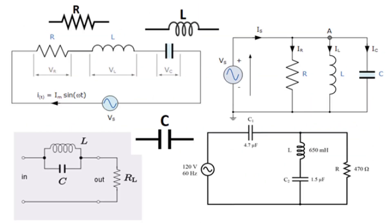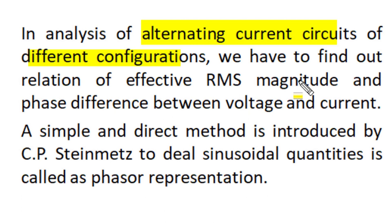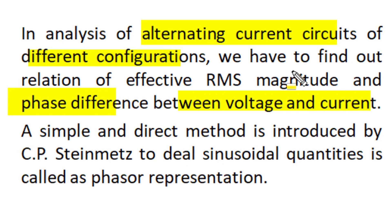Alternating current circuits can have different configurations of resistance, inductor, and capacitor in series, parallel, or combinations. In analysis we have to find the relation between rms voltage and rms current and the phase difference between them for different circuit conditions. A simple and direct method for such analysis is phasor representation.